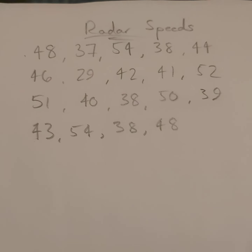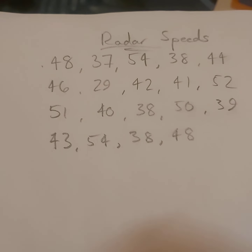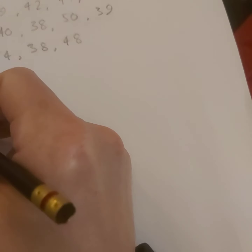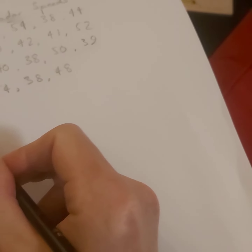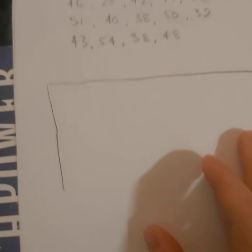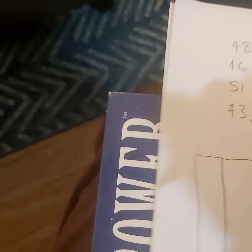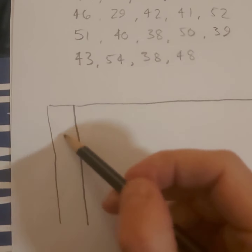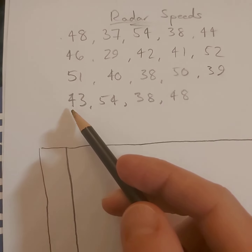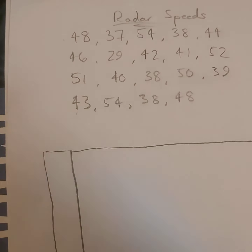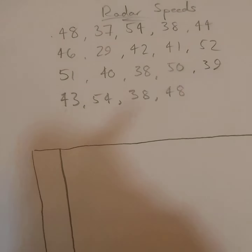The first thing I'm going to do is establish the stem part of the chart. I'll draw a quick chart — it's going to be a bit messy because it's hard to hold the phone and draw at the same time. The stem goes on the left side of the column, and it will contain all of the numbers represented in the tens column of the data set — the first digits that appear.